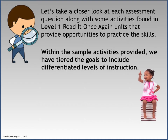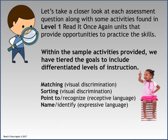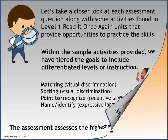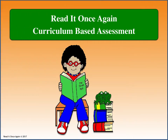Within the sample activities provided, we have tiered the goals to include differentiated levels of instruction. Here's a simple way to classify how Read It Once Again tiers the level of instruction in order of acquiring information and difficulty. The assessment assesses the highest level of the skill, which is most often the use of expressive language. You are now ready to examine the Read It Once Again curriculum-based assessment page by page. Each skill addressed will be followed by examples of activities taken from the Read It Once Again units to help you teach the skill.